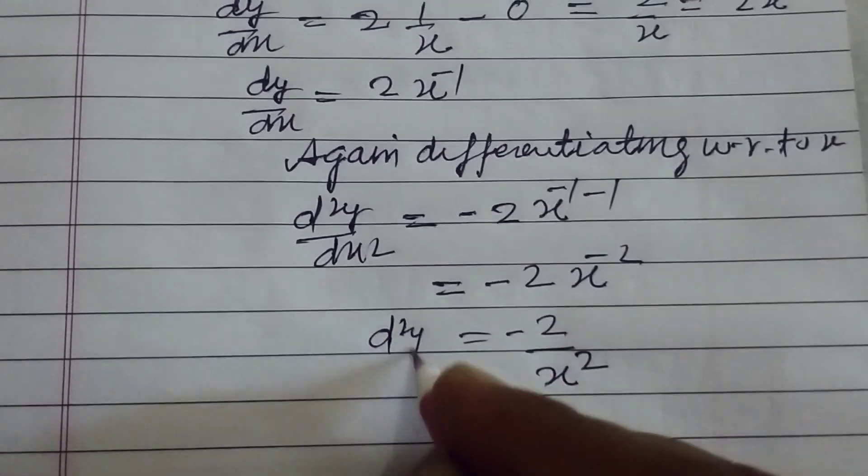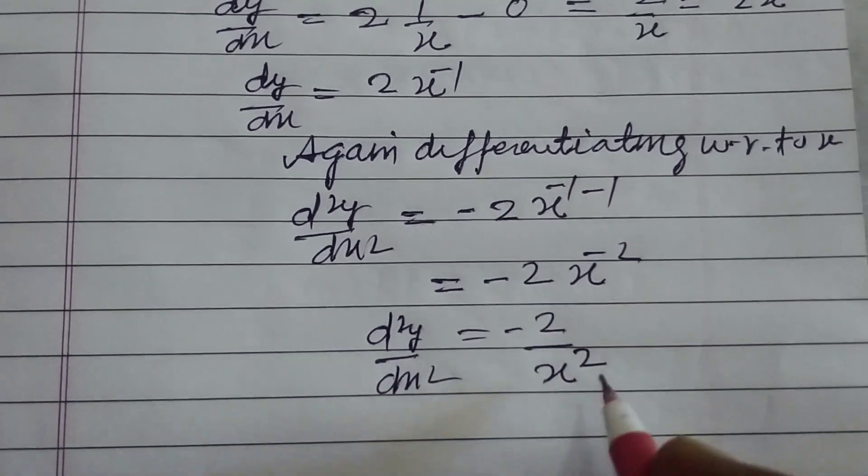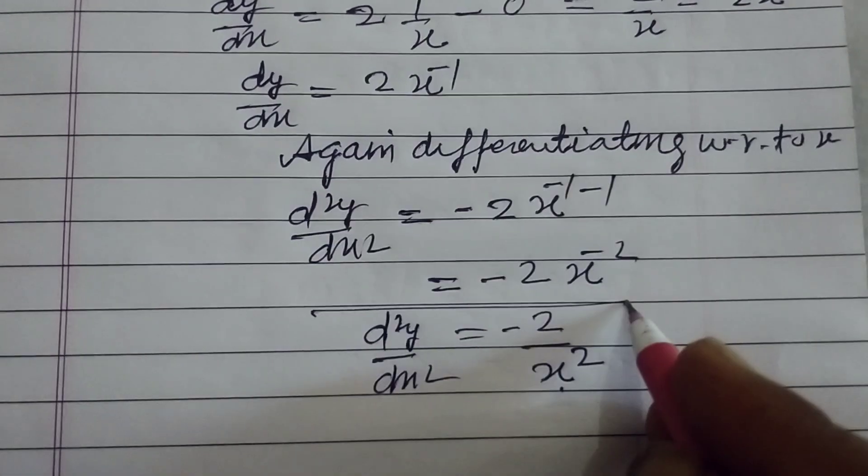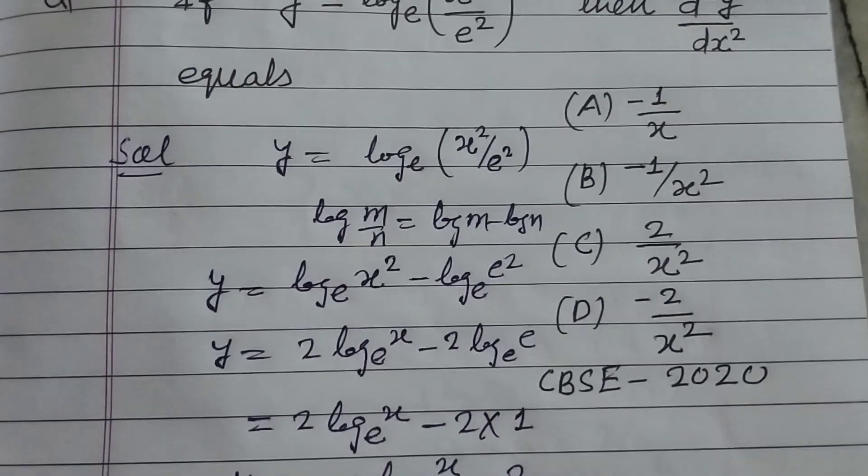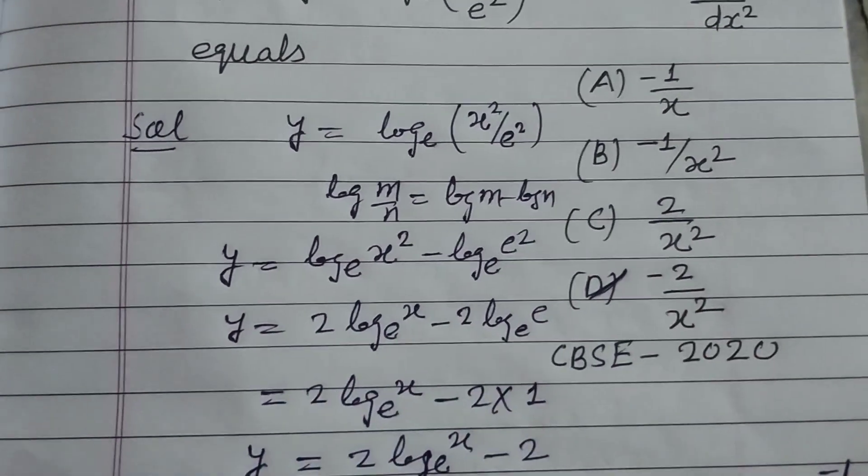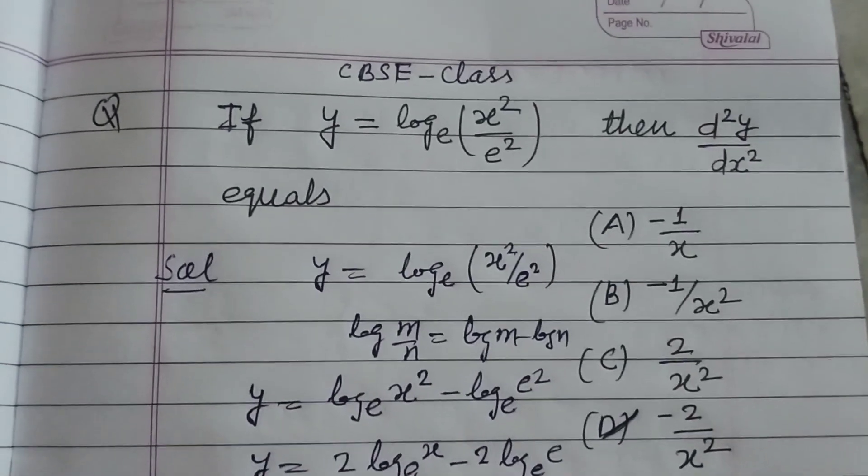So d squared y over dx squared equals minus 2 over x squared is the correct answer. It is given option D of this question. So option D is correct. Student, I hope you got it.